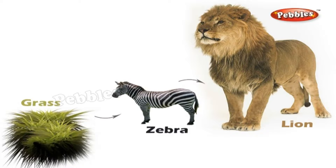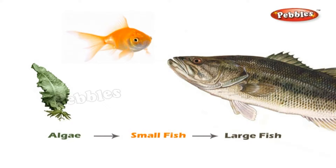In grassland, the following food chain operates: grass → zebra → lion. A typical food chain in a pond is: algae → small fish → large fish.